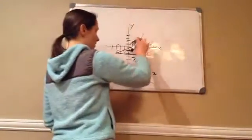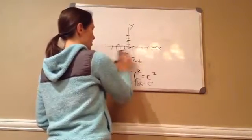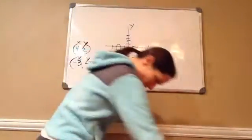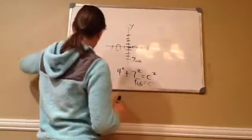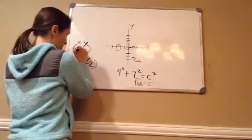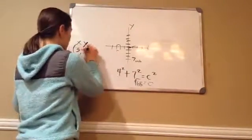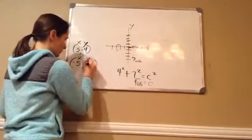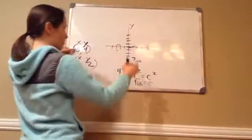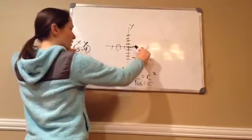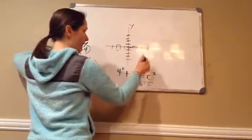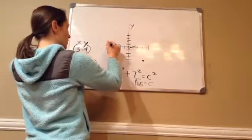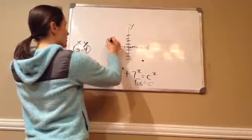Let's do one more just to make sure. This one says find the distance between the points. And here's the points. Three, negative four. And negative five, two. So, here we go. Three negative four is one, two, three. Negative four. Right here. And negative five, two. Negative one, two, three, four, five. Positive two.